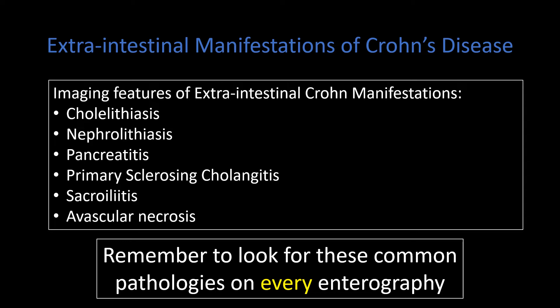Pancreatitis can occur in patients with Crohn disease, manifesting as interstitial edematous pancreatitis or, at times, necrotizing pancreatitis. Primary sclerosing cholangitis is something we more commonly associate with inflammatory bowel disease. Very early in its course, the findings can be quite subtle — you may only see a few isolated dilated intrahepatic bile ducts, often in the periphery. As that disease progresses, it will show the more classic manifestations of alternating stricturing and dilation of the intrahepatic bile ducts.